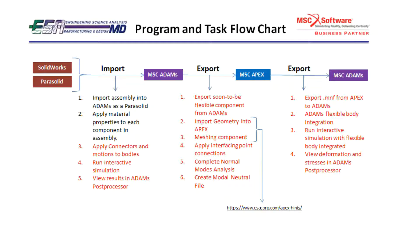Here is a flowchart of the topics we will be covering in our piston crankshaft assembly video series. In this video, we will be looking at the topics outlined in black. Starting off in SolidWorks, the assembly and its components will be described. Then the assembly will be exported as a parasolid and imported into Adams. And finally, in Adams we will go into detail on assigning material properties to the imported components. Please check out our other videos where we will cover the rest of the topics outlined in red, including applying connectors and motions in Adams, meshing in Apex, and flexible body integration.